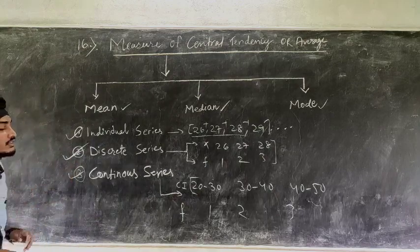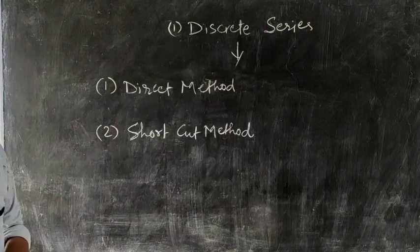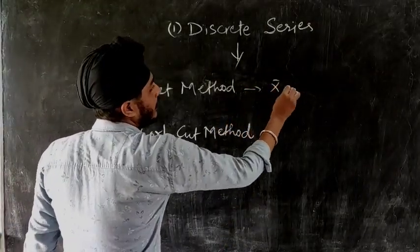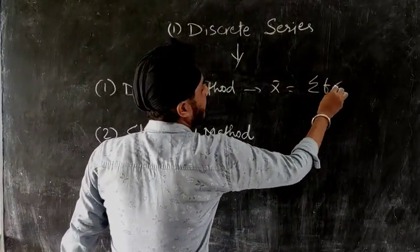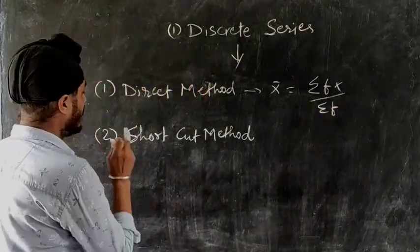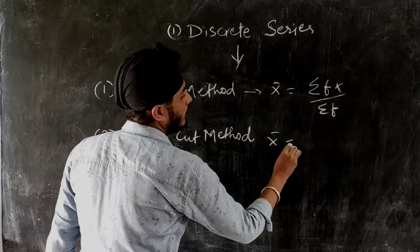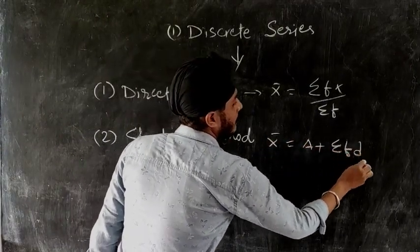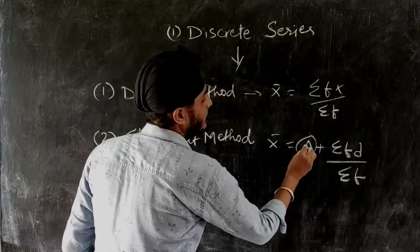Now we will talk about discrete series. For discrete series you have to study two methods: direct method and shortcut method. Under the direct method, the formula for finding mean — which we denote x̄ — is: x̄ = Σfx / Σf. In the shortcut method the formula is: x̄ = A + Σfd / Σf, where A means assumed mean.